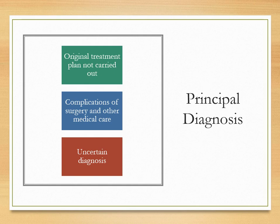Next: situations where the original treatment plan is not carried out. For example, a patient comes in for a cholecystectomy due to cholelithiasis or cholecystitis, but the procedure or treatment wasn't performed. The coding guidelines state that even though the treatment was not carried out due to unforeseen circumstances, the reason they were there for the surgery is sequenced first. Of note, there is a Z status code that can indicate the procedure was not done due to the particular circumstance.